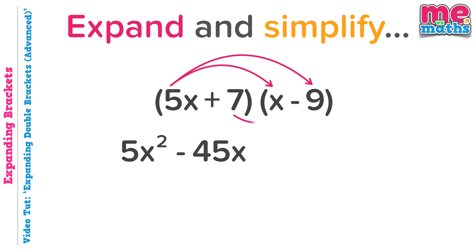Now, positive 7 times positive x will give plus 7x. And finally, positive 7 times negative 9 gives a negative answer. 7 times 9 is 63, so minus 63.